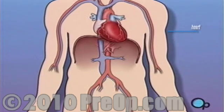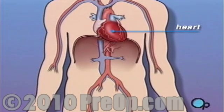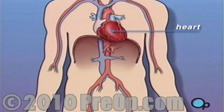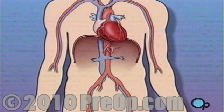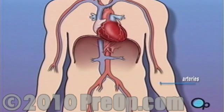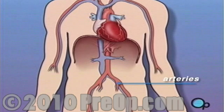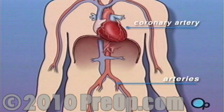The heart is located in the center of the chest. Its job is to keep blood continually circulating throughout the body. The blood vessels that supply the body with oxygen-rich blood are called arteries. The arteries that supply blood to the heart muscle itself are called coronary arteries.